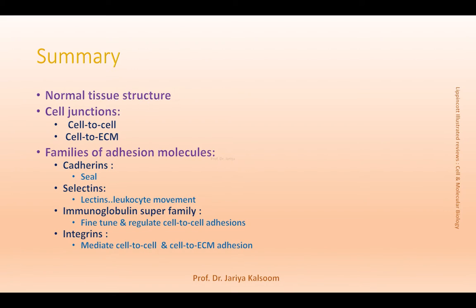In summary, cell adhesion is required for normal tissue structure. Cell junctions are composed of adhesion molecules that mediate cell-to-cell and cell-to-ECM adhesion. There are four families of adhesion molecules. Cadherins seal adjacent cells and provide long-lasting adhesion. Selectins are involved in leukocyte movement and contain a carbohydrate lectin domain. The immunoglobulin superfamily fine-tunes and regulates cell-to-cell adhesion. Integrins mediate cell-to-cell and cell-to-ECM adhesion. Disruptions in cell adhesion can result in disease.